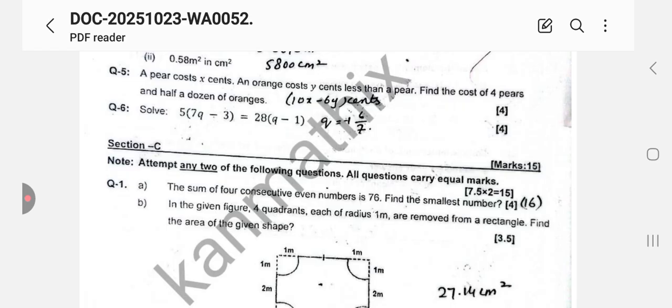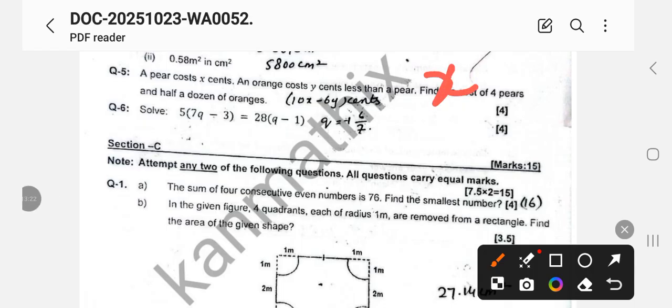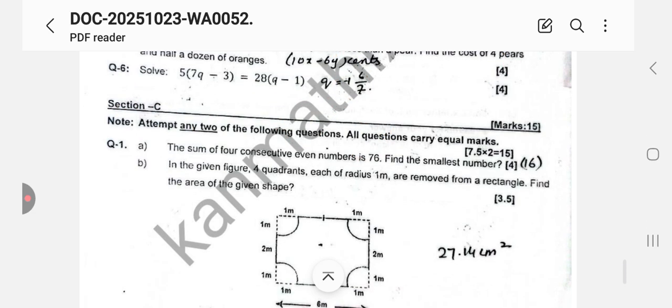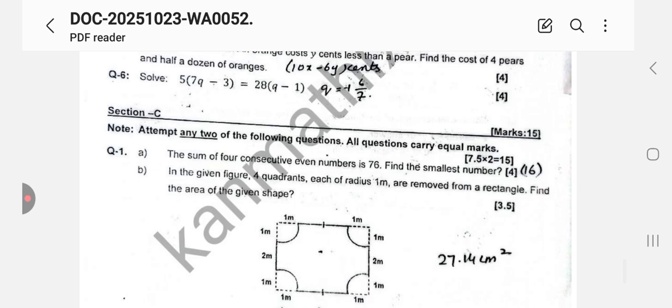Question number 5: A pear costs 10x cents and orange costs y cents less than a pear. Find the cost of 4 pears and half a dozen oranges. Half a dozen oranges. So here it was easy. Pear ki cost 10x thi aur orange ki y less than pear thi. So y less than pear, this is for orange, this is for pear. You have to find for 4 pears, means 4 times 10x, and half dozen, like 6 oranges. Orange ki thi 10x minus y, so just you will solve this and you will get 40x minus 6y. Next is also simple, you will solve Q.